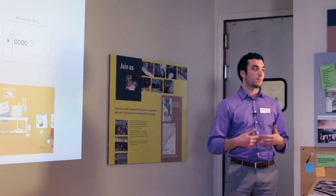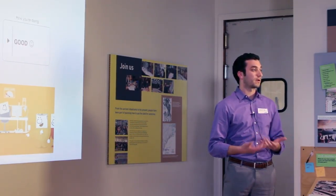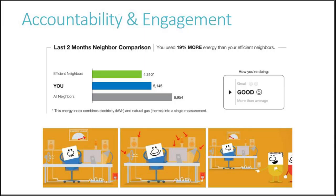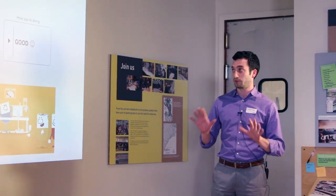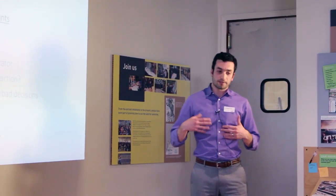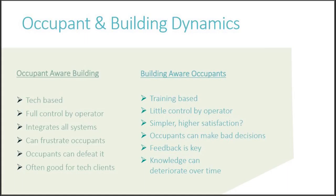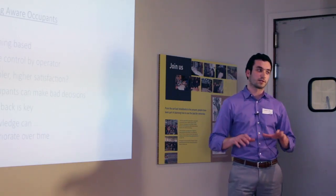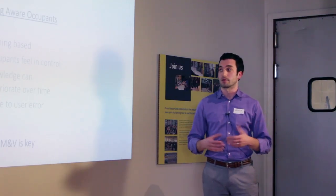Another place this comes into play is engaging tenants and making sure they're getting the information they need. In a lot of projects, you're trying to compare your usage against your neighbors so you can understand what impact you're actually having. We talk about two ways occupants and buildings interact: a building paying attention to occupants through smart building sensor configurations, or occupants paying attention to the building in a more passive situation. In either case, measurement and verification is necessary to maintain that dynamic.